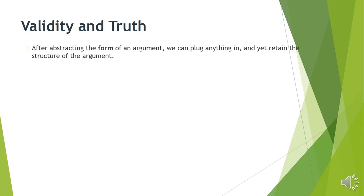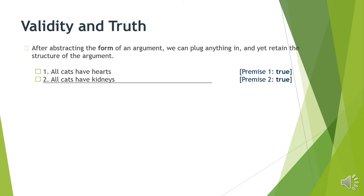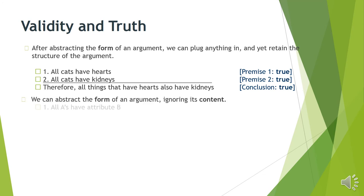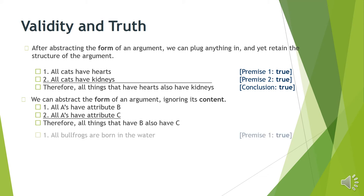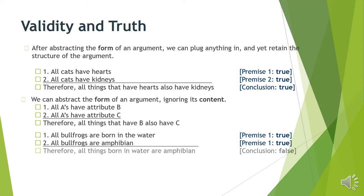Now consider: 'All cats have hearts; all cats have kidneys; therefore all things that have hearts also have kidneys.' If we look at its structure — all A's have attribute B; all A's have attribute C; therefore anything with property B also has C — can you conclude that? No. 'All bullfrogs are born in water; all bullfrogs are amphibian; therefore all things born in water are amphibian?' No — dolphins are born in water but are not amphibian. So the argument structure is invalid — the premises can't give you the conclusion even though it's aiming for guarantee.